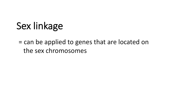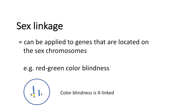Going to sex linkage. Sex linkage can be applied to genes that are located on the sex chromosomes. We take red-green colorblindness as an example — colorblindness is X-linked, meaning it is located on the X chromosome.